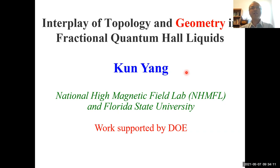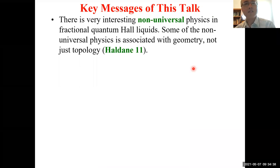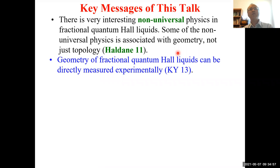So I have topology in the title of my talk like many talks these days, and we of course all understand that topology is responsible for the universal physics that we've heard a lot about recently this week. But that's actually not the keyword of this talk. I actually highlight a different word in the title. So as pointed out by Duncan in a paper almost exactly 10 years ago, there is actually very interesting non-universal physics in quantum Hall effect, especially fractional quantum Hall effect. Some of the non-universal physics is actually associated with geometry, not just topology.